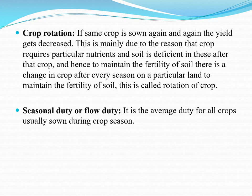Next is seasonal duty, also called flow duty. It is the average duty for all the crops usually sown during the crop season. In this type of duty, all the transit losses are taken into consideration, and it is mainly used for water planning.